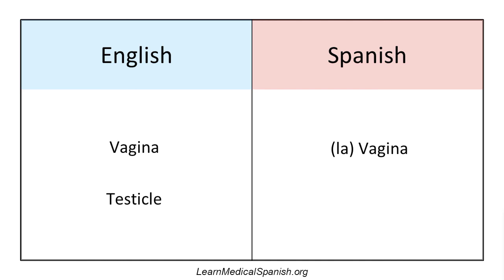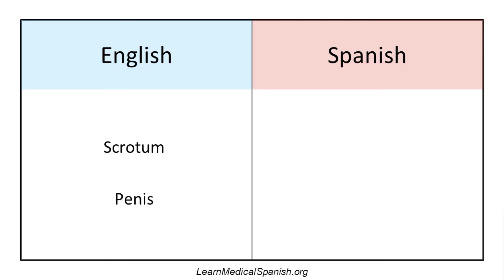Next word is testicle. El testículo. And how would you make that plural? Los testículos. Los testículos. Scrotum. El escroto. El escroto. Penis. El pene. El pene.